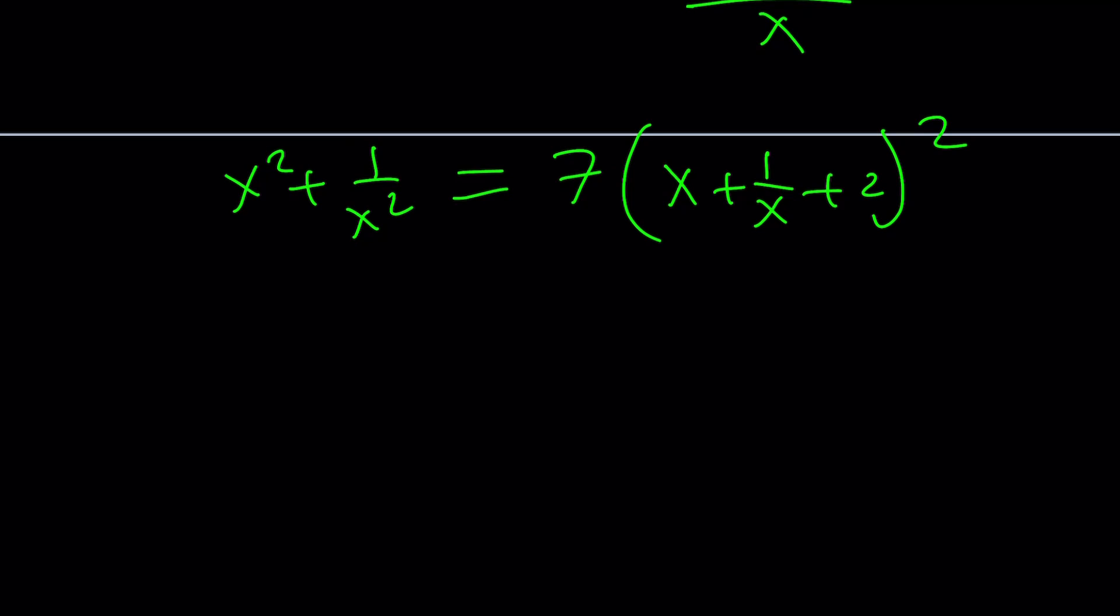Notice that our x plus 1 over x pops up again. You can call it something. I don't know. U maybe, z, whatever you like. And this is going to be u squared minus 2. As before, you're going to get u squared minus 2 equals 7 times u plus 2 squared, which is u squared plus 4u plus 4.